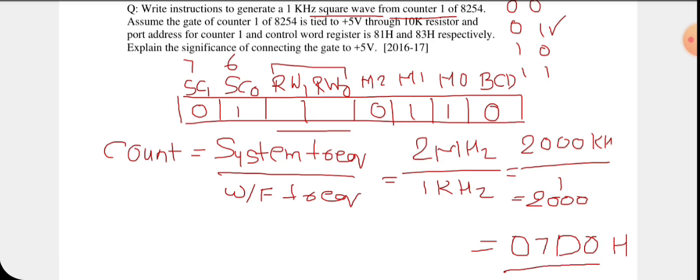Since the count value 07D0H has 4 hex digits, we have to load 16 bits. So RW1 and RW0 will be 1 1, meaning we write the lower byte first, then the upper byte. This gives us the full content of the control word register as 76H. We will load this value into the control word register so that the 8254 performs accordingly.